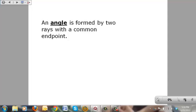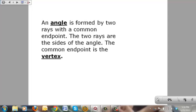An angle is formed by two rays with a common end point. The two rays are the sides of the angles. The common end point is known as a vertex.